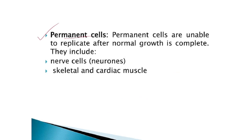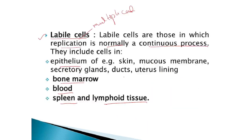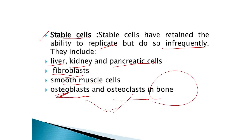The third type of cell is called permanent cells. Permanent cells are unable to replicate — they cannot multiply. Once damaged, that's all; they are gone and won't regenerate. After normal growth, they are completely stagnant. Examples of permanent cells are nerve cells — our neurons, the structural and functional unit of the nervous system. Once a neuron is damaged it will not regenerate. Also, skeletal and cardiac muscles are permanent cells. Smooth muscles, by contrast, are stable cells that multiply for a short period. But skeletal and cardiac muscles, once damaged or dead, will not regenerate. So the three types are: labile cells, stable cells, and permanent cells.